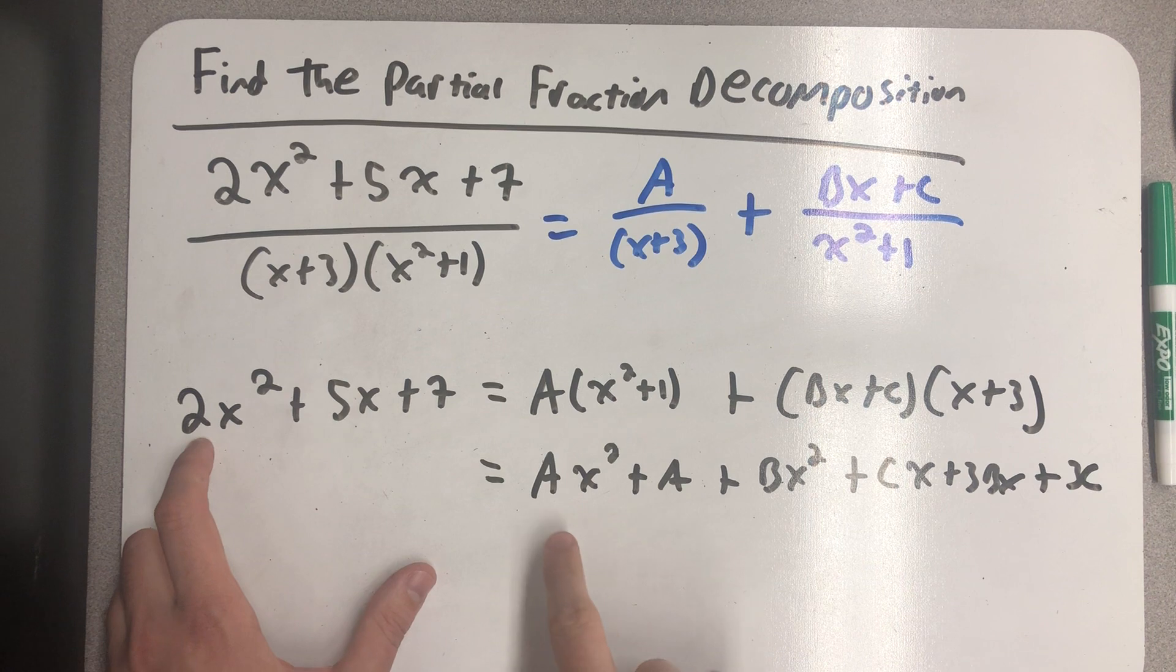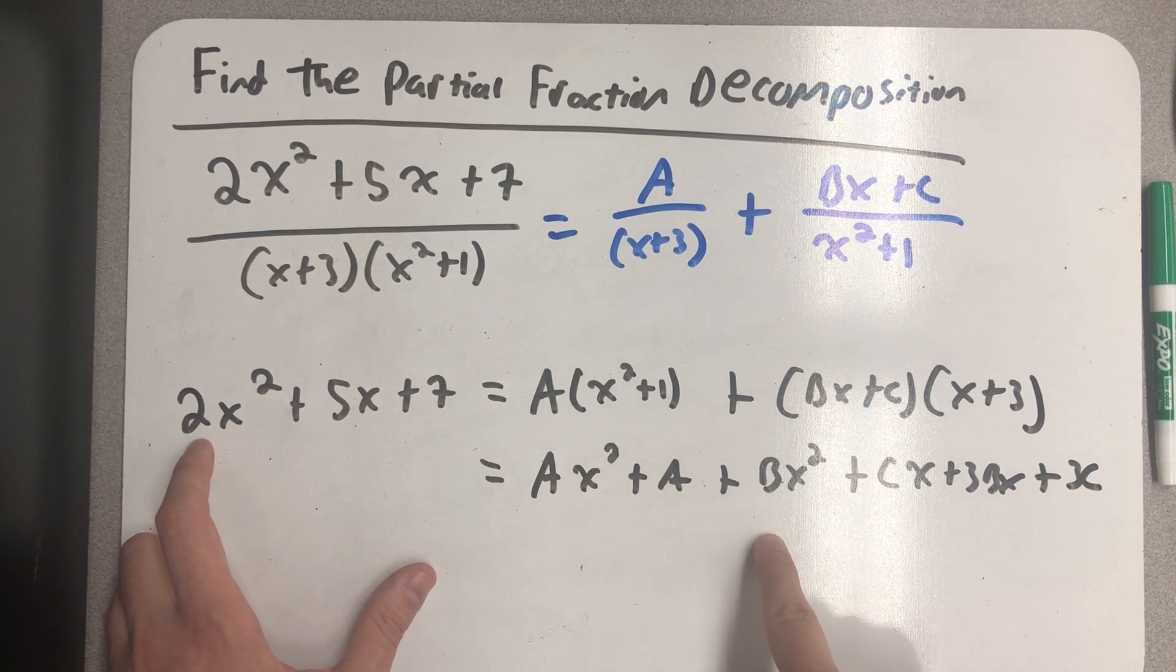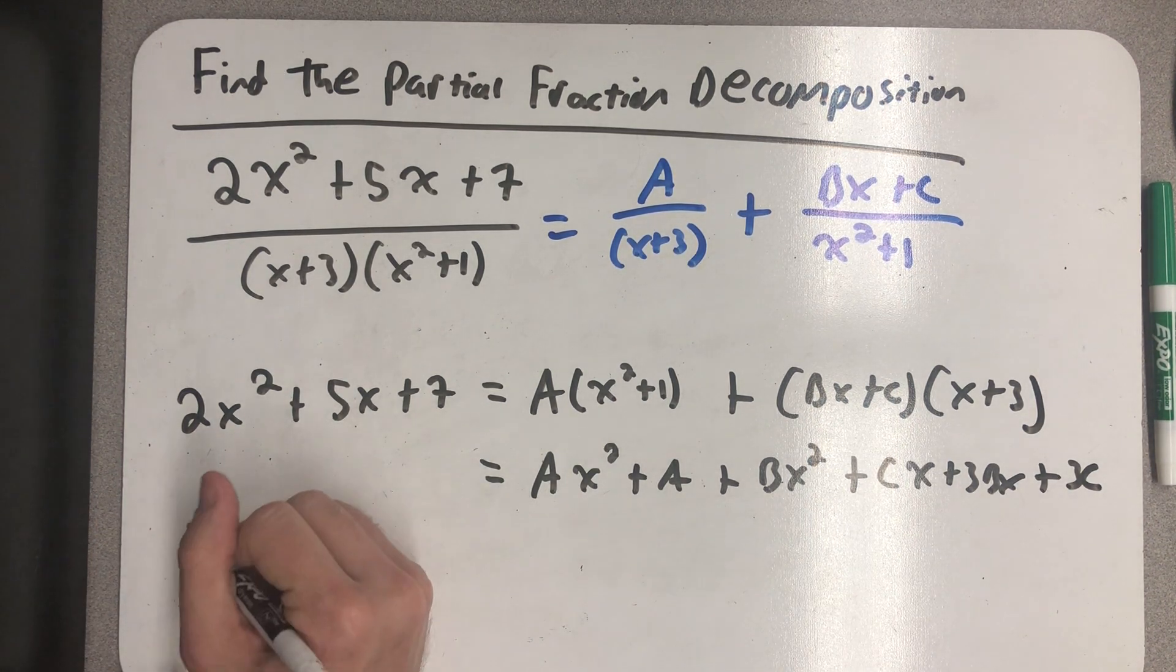So, 2x squared has to be equal to ax squared plus bx squared. So, a plus b has to equal 2.